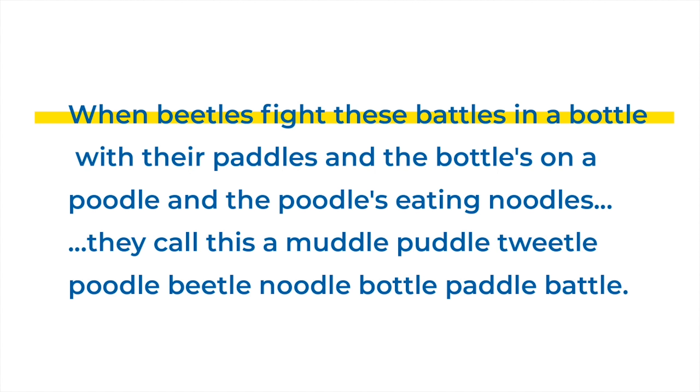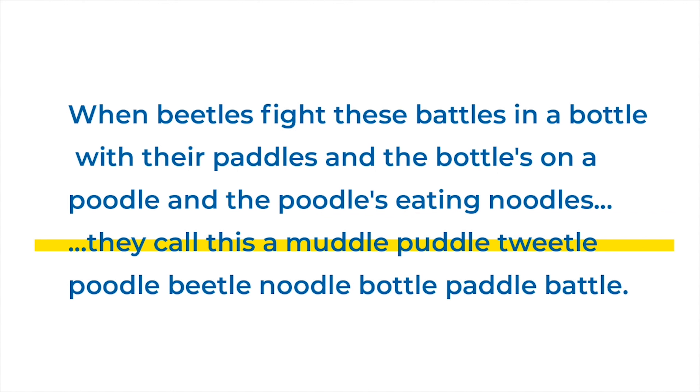Cat and bat and all of that. If you want to see the master of rhymes at work, I'm going to give you two examples: Dr. Seuss and Eminem. First we're going to look at a passage from Dr. Seuss from Fox and Socks. I'll read that for you. But then I'm going to have Eminem share with you his rhyming styling. 'When beetles fight these battles in a bottle with their paddles, and the bottles on a poodle, and the poodles eating noodles, they call this a muddle, puddle, tweedle, poodle, beetle, noodle, bottle, paddle, battle.'